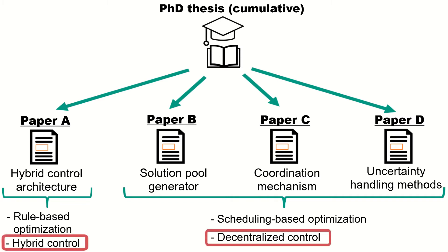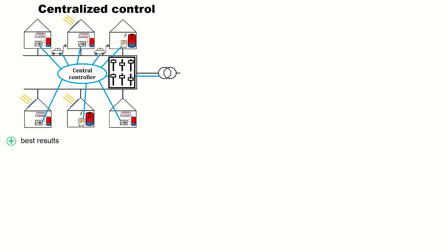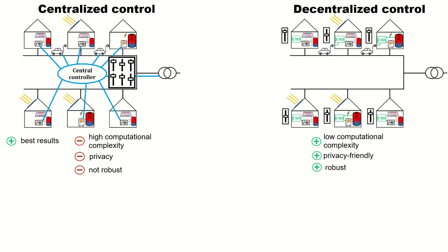Let's have a look at the difference between centralized, decentralized, and hybrid control. In centralized control a central control unit gets data from all buildings and directly controls the flexible devices like heat pumps or electric vehicles. This leads to the best results, however it has high computational complexity, it infringes on the privacy of inhabitants, and it's not robust against single point failures. In decentralized control each building controls its own devices on its own, leading to low computational complexity, privacy friendliness, and robustness. However, non-coordinated control leads to bad results.